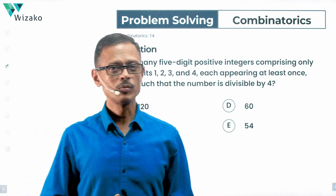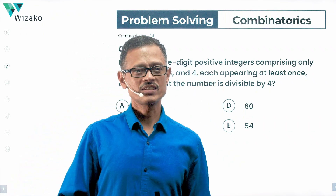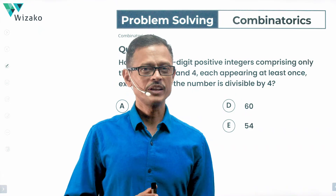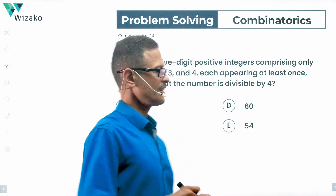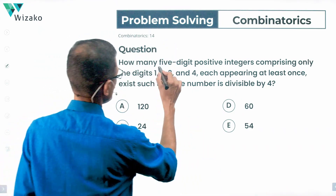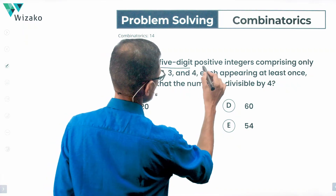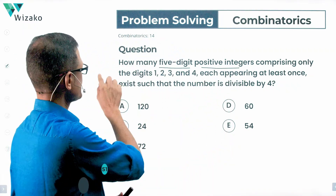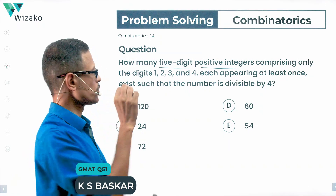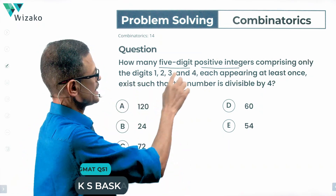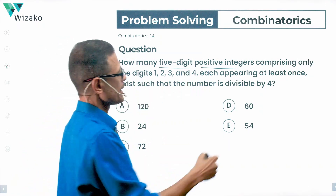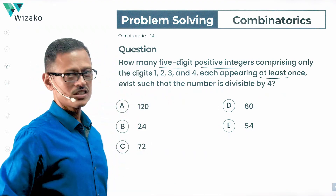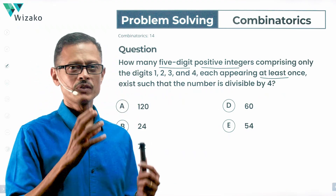Hi, this is a medium difficulty problem-solving practice question. This GMAT practice question is from Permutation Combination. A very interesting question. How many 5-digit positive integers comprising only the digits 1, 2, 3, and 4, each appearing at least once, exist such that the number is divisible by 4?